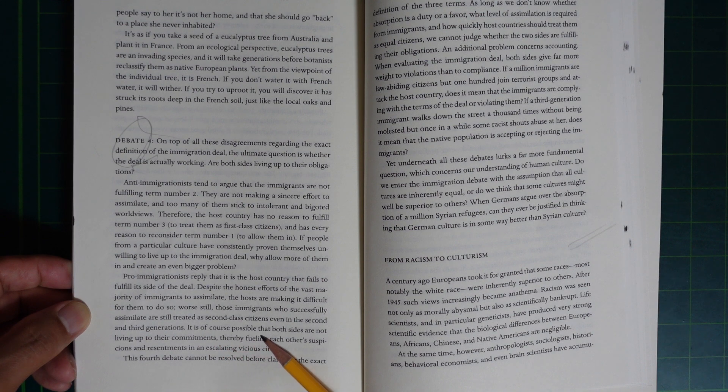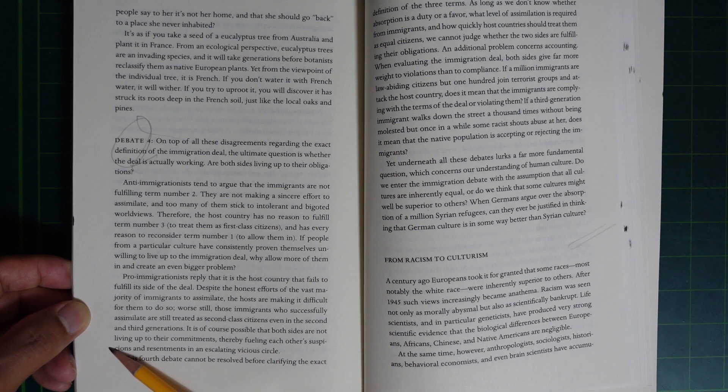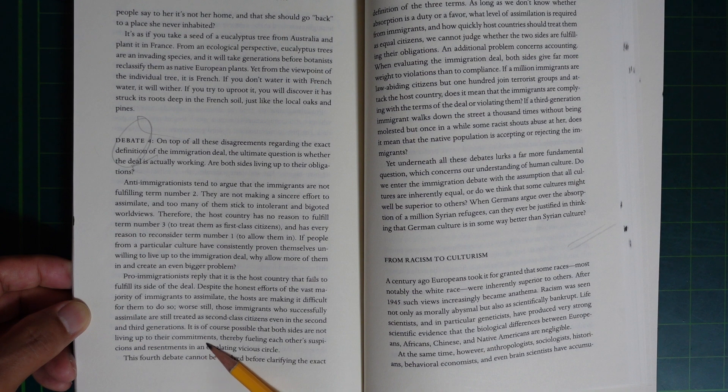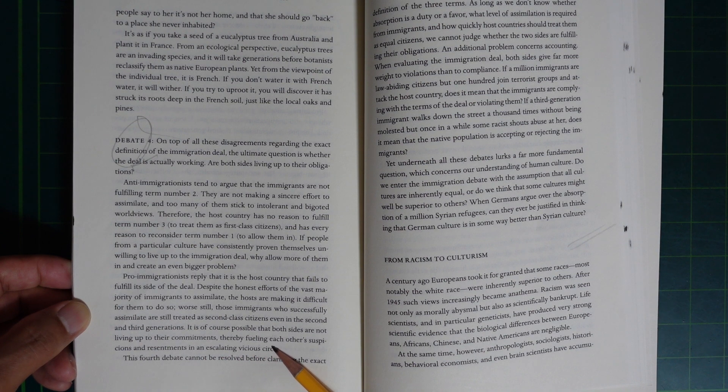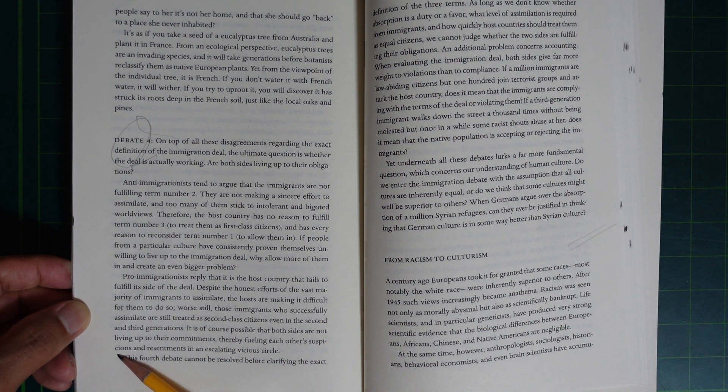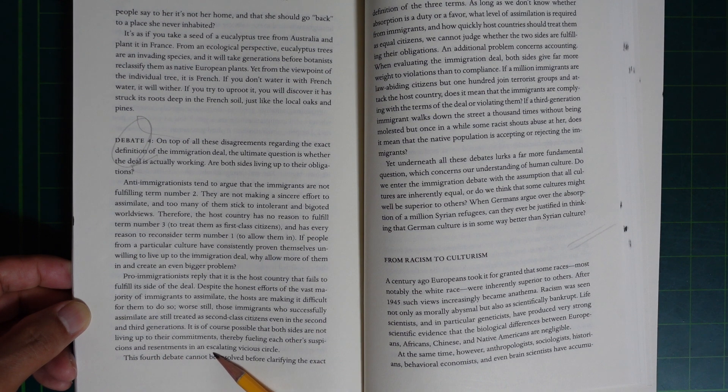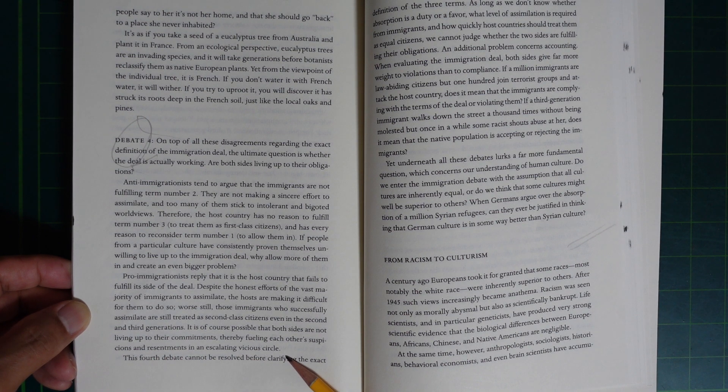those immigrants who successfully assimilate are still treated as second-class citizens even in the second and third generation. It's of course possible that both sides are not living up to their commitments, fueling each other's suspicions and resentment in an escalating vicious circle.